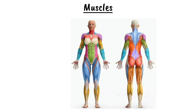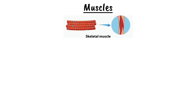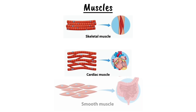Muscles play a vital role in movement and bodily functions, making them one of the most essential components of the human body. When we think of muscles, we often imagine the ones that help us run, lift weights, or maintain posture. However, the human body actually has three distinct types of muscles: the skeletal muscle, the cardiac muscle, and smooth muscle. Each of these muscle types has a unique function and characteristics, yet they all share the common ability to contract, enabling movement and various physiological processes.